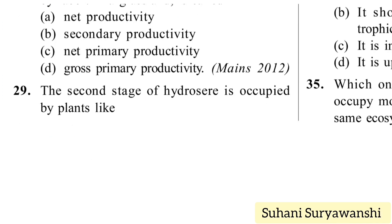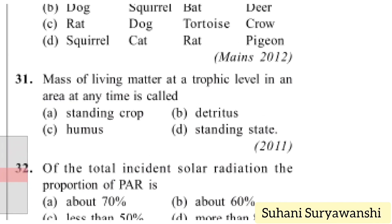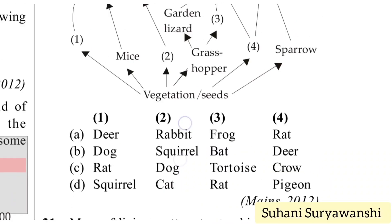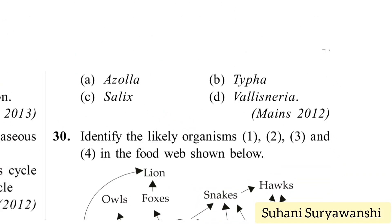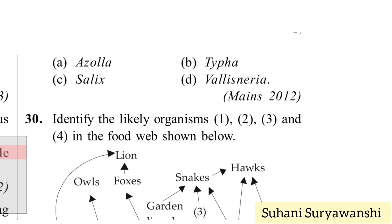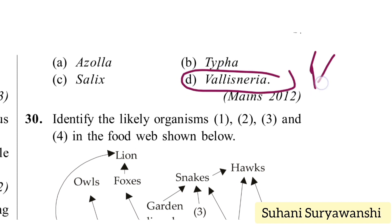The second stage of hydrosere is occupied by plants like Azolla, Typha, Salix, and Vallisneria. Among these, only Vallisneria is a plant that grows in water, so option D is the answer.